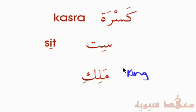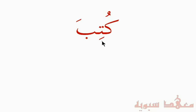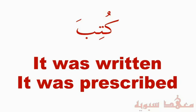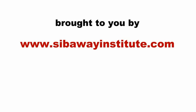Let's practice all three vowels together. We have a word: the Kaf with a Dhamma — 'Ku.' Then the Ta with a Kasra — 'Ti.' And the Ba with a Fatha — 'Ba.' So: Ku-Ti-Ba, Kutiba. Kutiba means 'it was written' or 'it was prescribed.' That's just a brief explanation of the short vowels. Inshallah, in the next lesson we'll be talking about the long vowels.